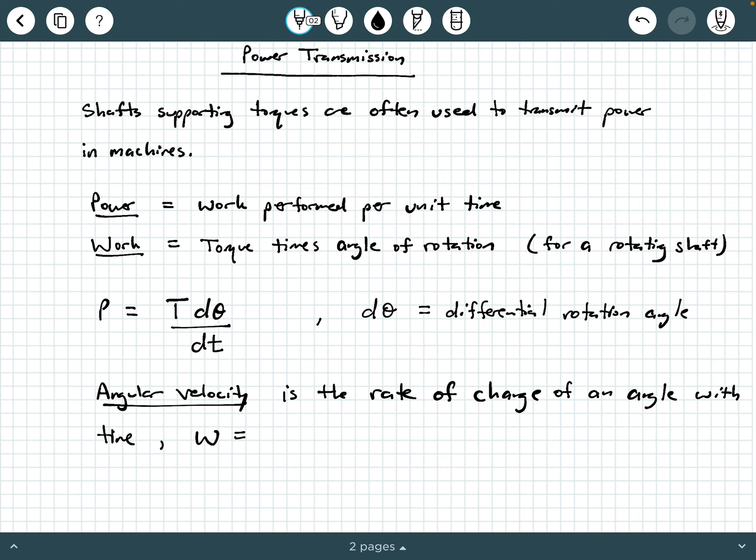Angular velocity is the rate of change of an angle with time. And so we typically call this omega. Omega is angular velocity. And if it's a rate of change of an angle with time, how can we write this in a differential form? Well, it's found right here in the definition of power.